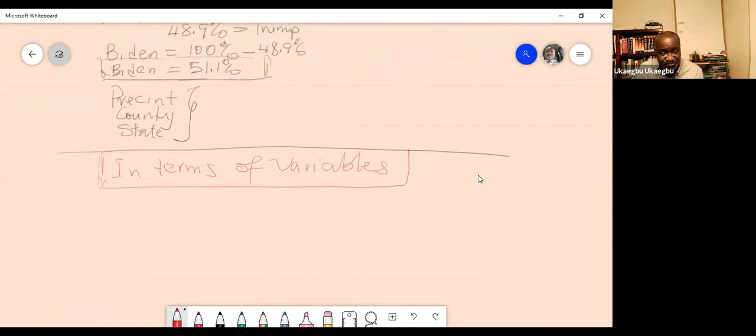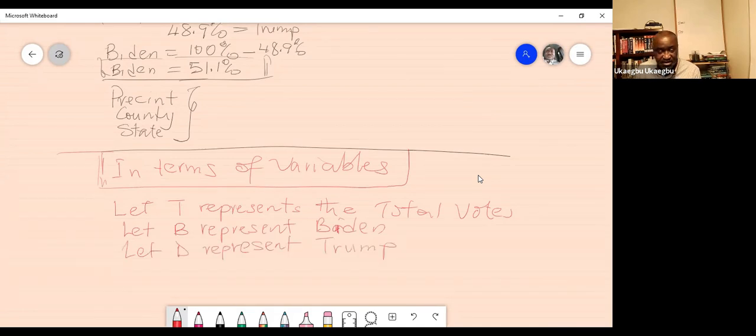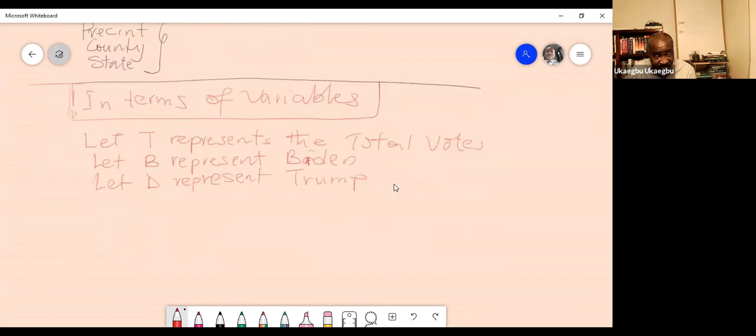Now you can say let T represents the total vote, the 150 million. You can say let B represents Biden, and you can say let D represents Trump. So now, in terms of the variables that I gave, create an equation that will represent the total number of votes.